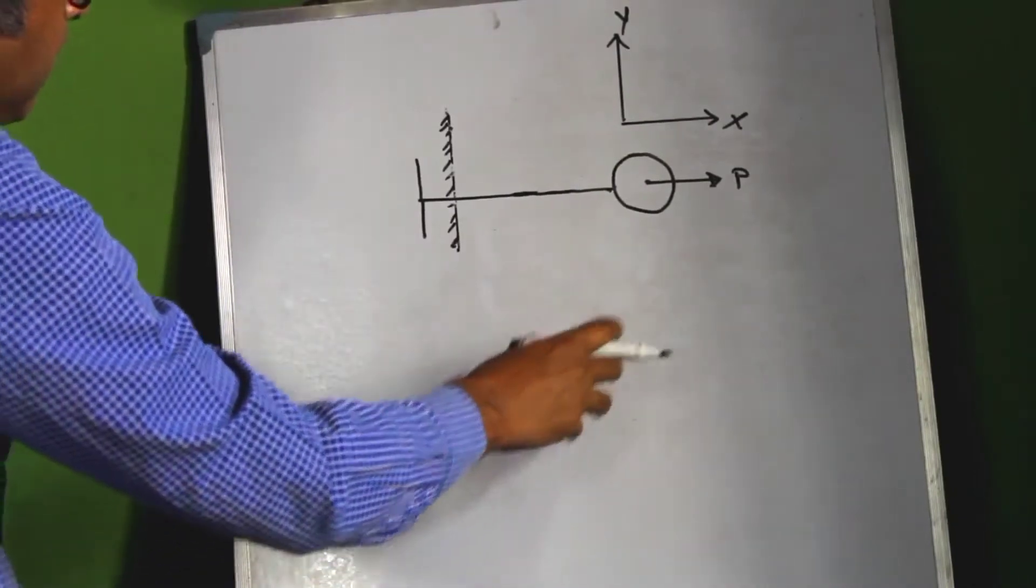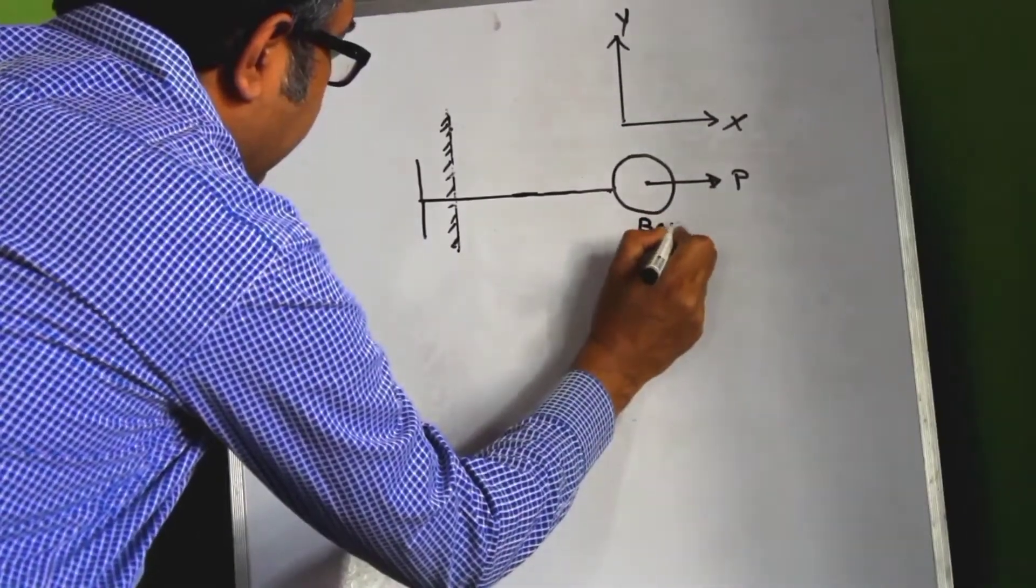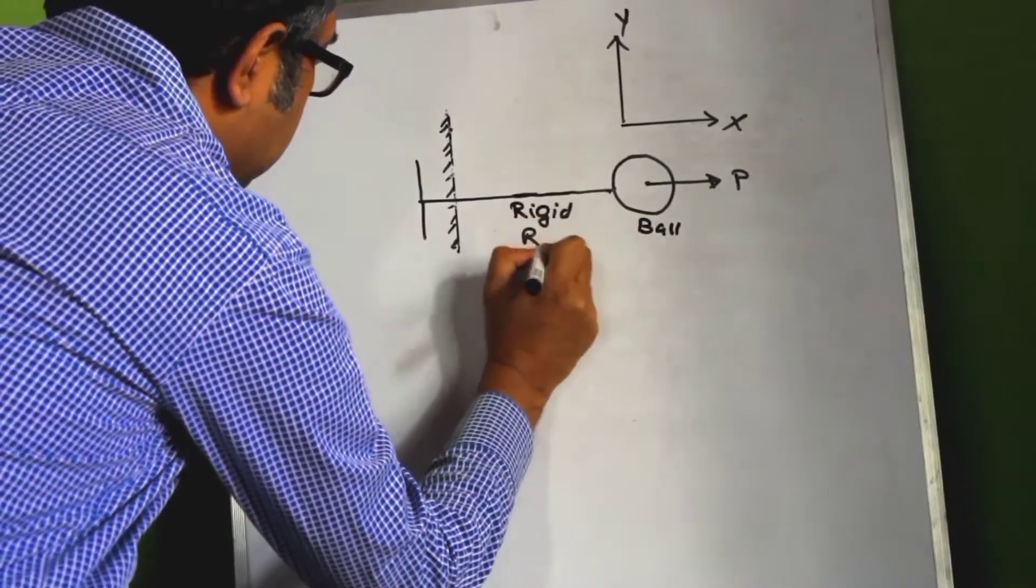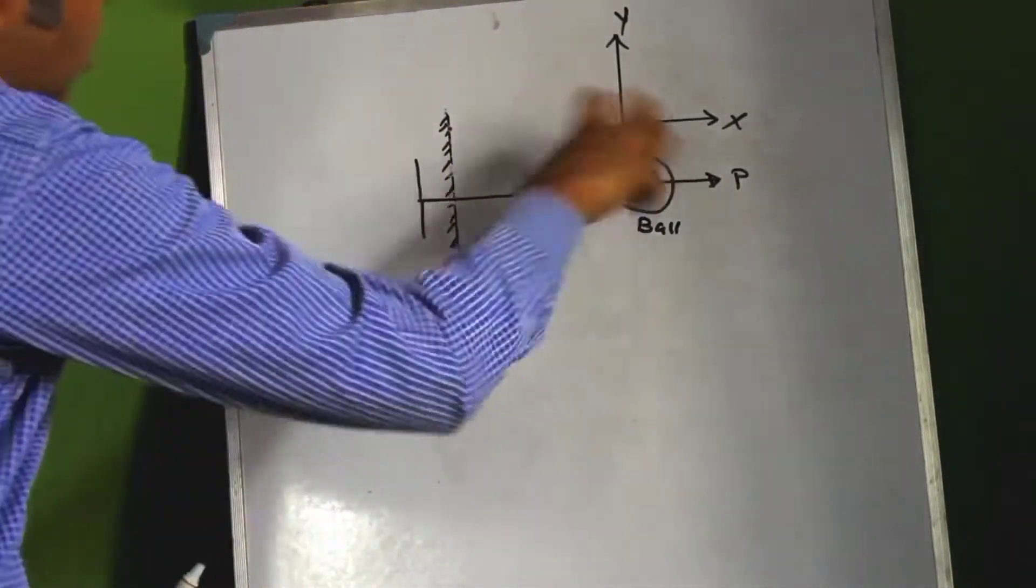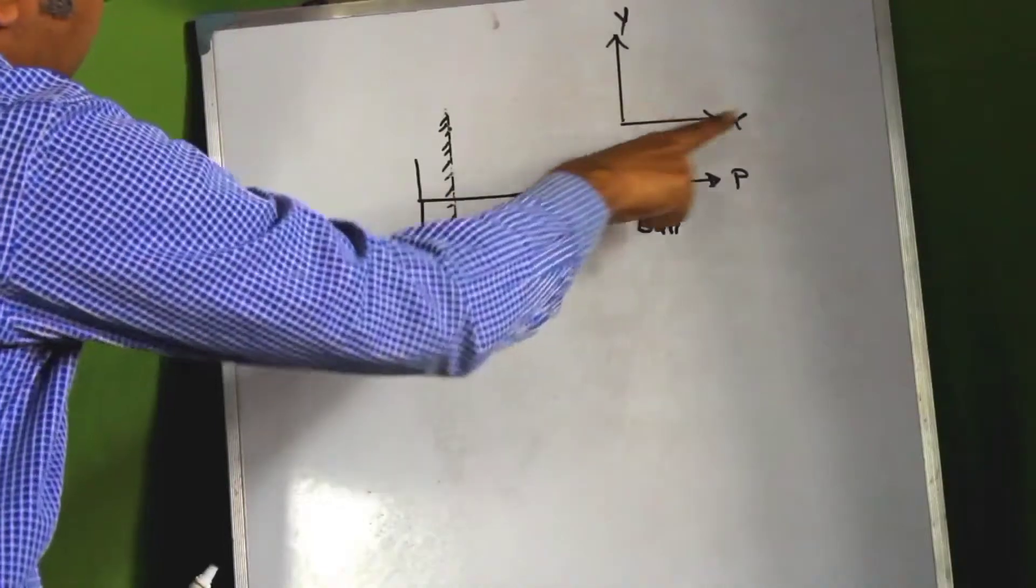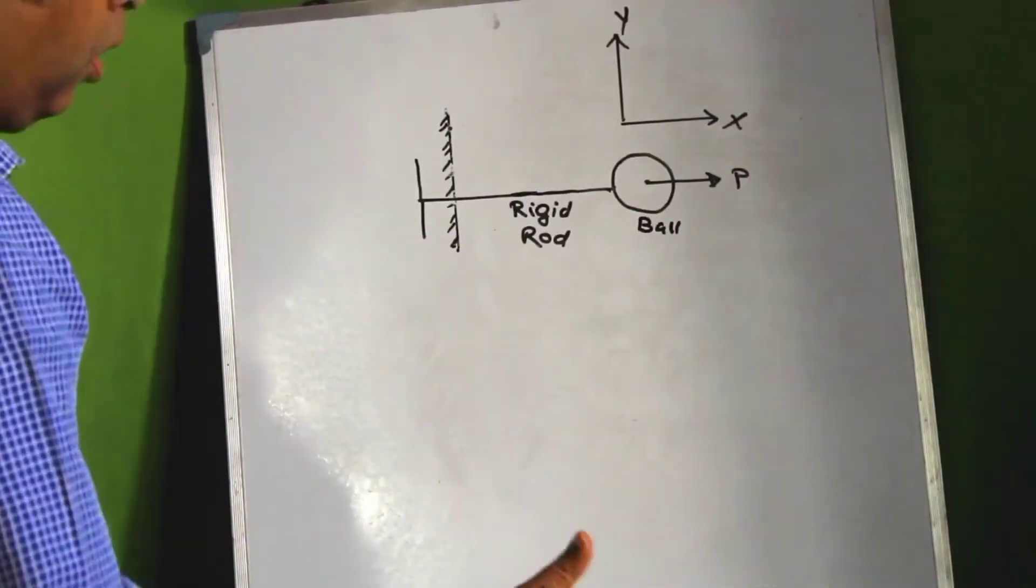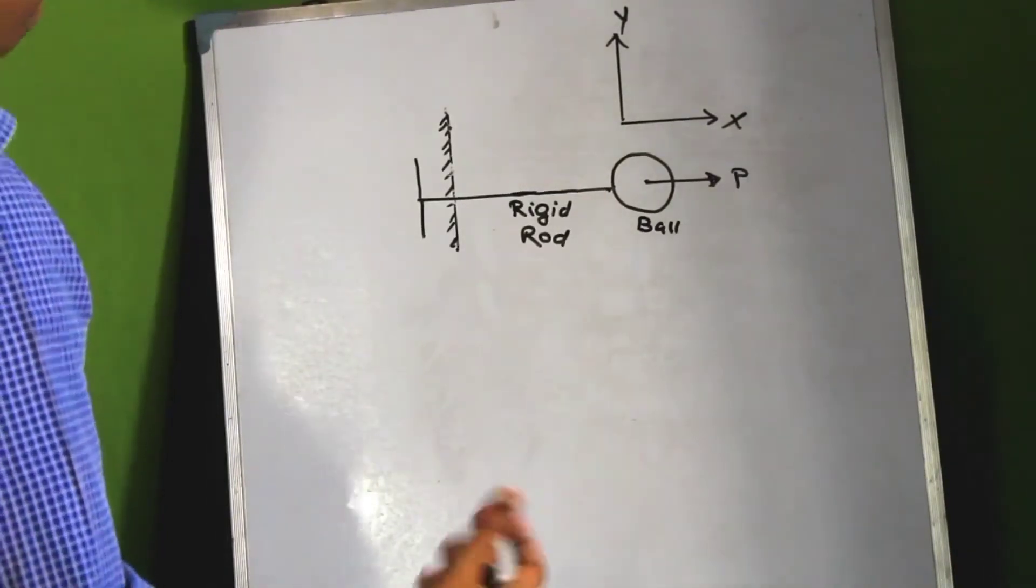Now let us consider this weightless ball here to be connected to this rigid rod which is being anchored to this wall and we are trying to pull this ball in the positive direction of the x-axis. Will the ball move? No, it won't.